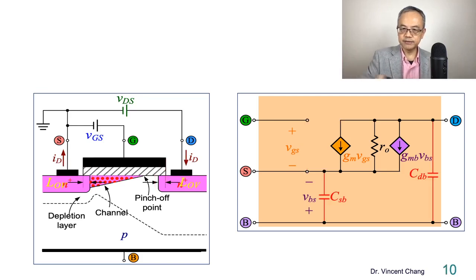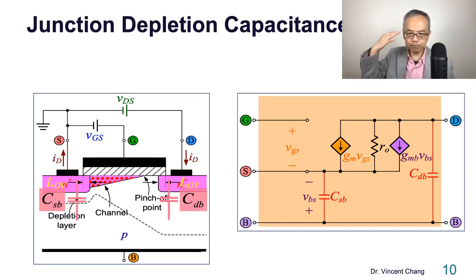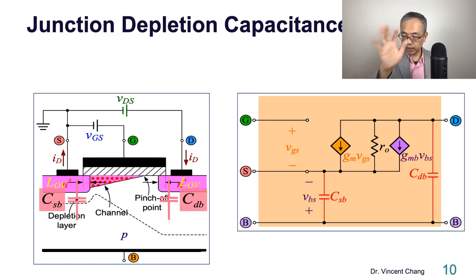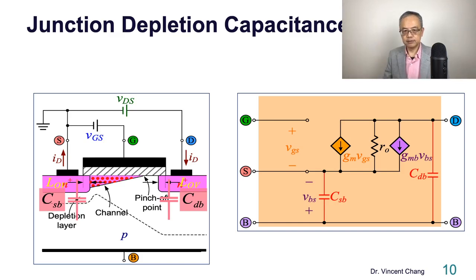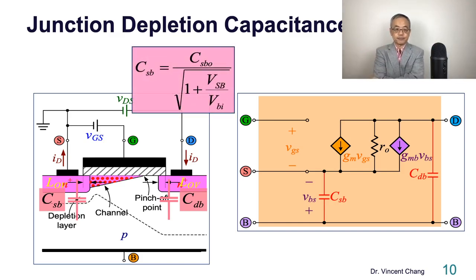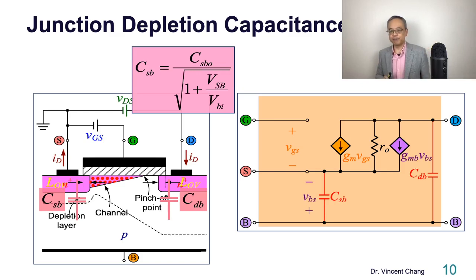Source-to-body and drain-to-body are called depletion capacitors. Looking at the diagram on the left, always map the model to the physical device — this is why you learn semiconductor devices. Source-to-body and drain-to-body are reverse-biased N+P junctions, forming two junction depletion capacitors.